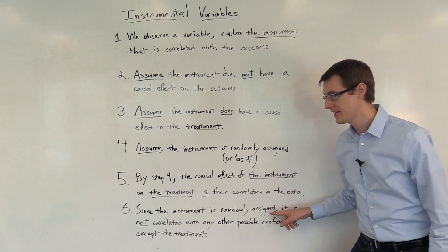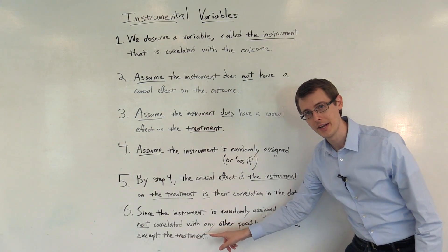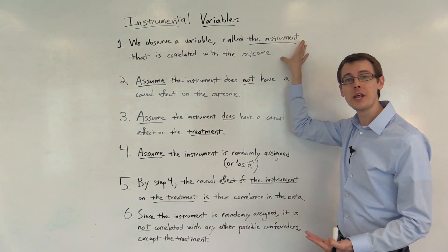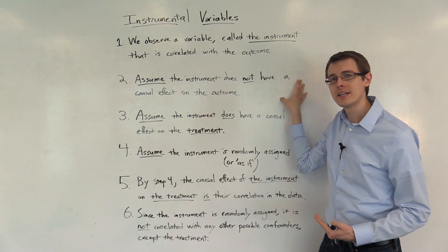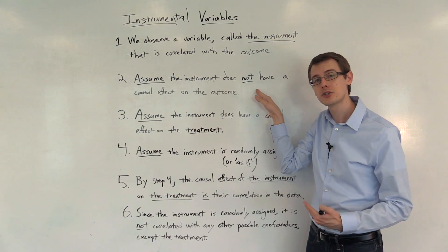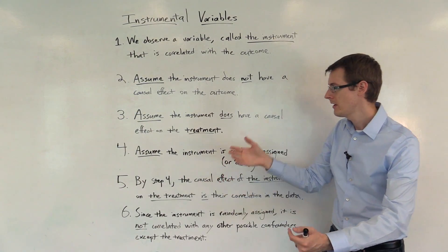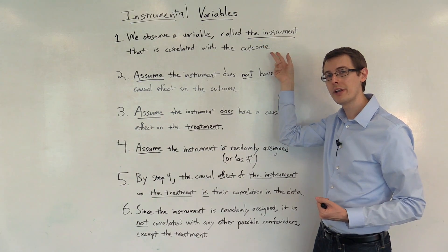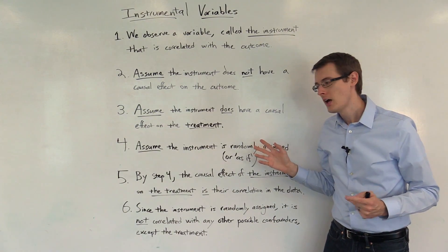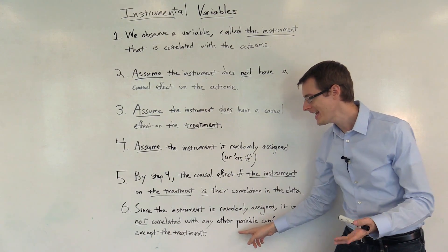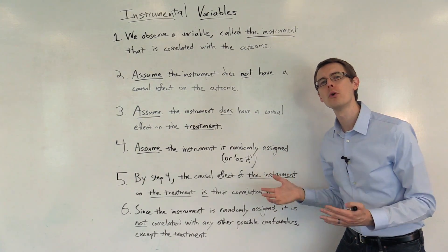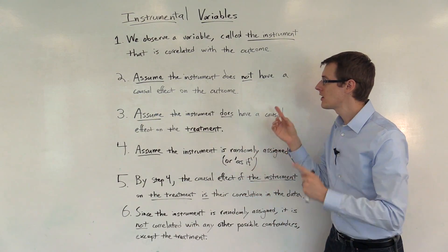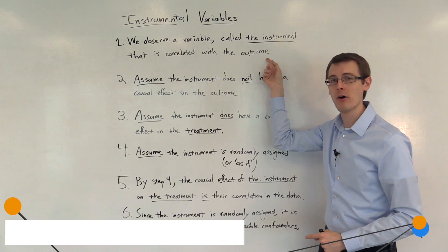Step 6: Since the instrument is randomly assigned by Step 4, it is not correlated with any other possible confounder except for the treatment. So where does that leave us? We've got this variable called the instrument that's correlated with the outcome. The instrument doesn't have a causal effect on the outcome, so this correlation isn't picking up a direct causal effect of the instrument — it's got to be picking up the causal effect of a confounder. The instrument does have a causal effect on the treatment, so we might be picking up the causal effect of the treatment on the outcome. But because the instrument is randomly assigned, it can't be correlated with any other confounders except the treatment. We've ruled out all possible explanations for the correlation between the instrument and the outcome except one: that there's a causal effect of the treatment on the outcome. And that's what we're trying to get at.